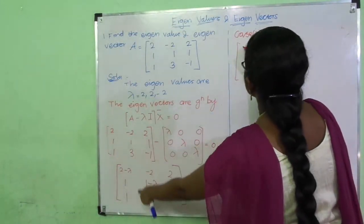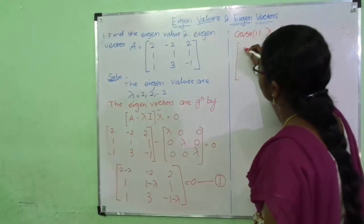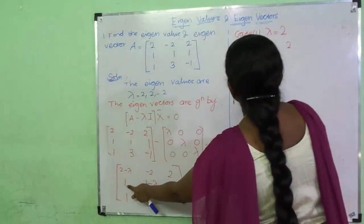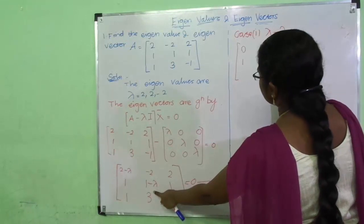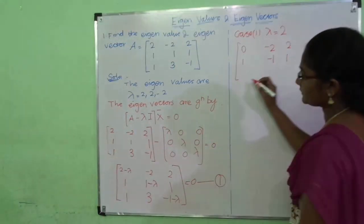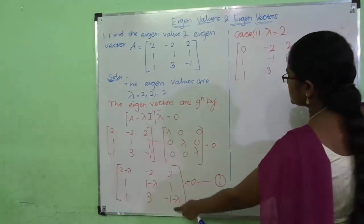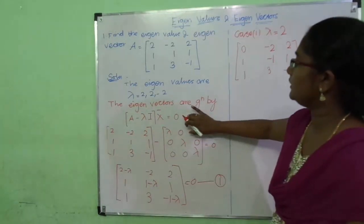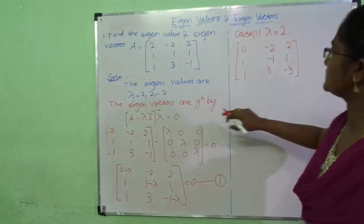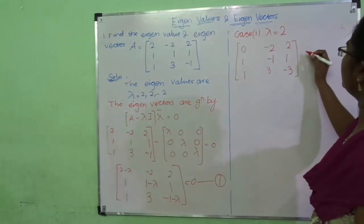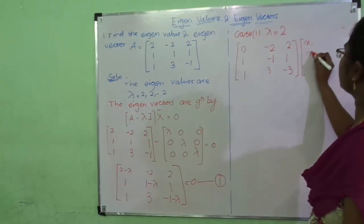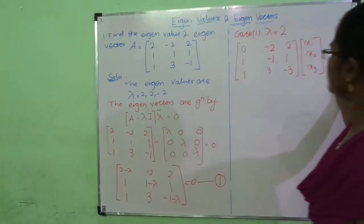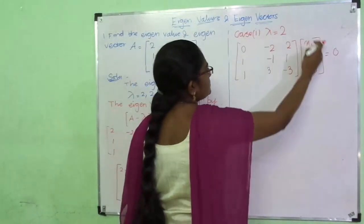Substituting lambda equal to 2: 2 minus 2 gives 0, then -2 and 2. Then 1, then 1 minus 2 gives minus 1, and then 1. Then 1, 3, and minus 1 minus 2 gives minus 3. We use the formula (A minus lambda I) times X-bar equal to 0, where X-bar is [x1, x2, x3]. Now we do the matrix multiplication — rows into columns.